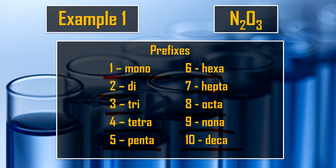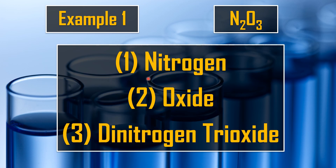Since we have two nitrogen, we use 'di' — dinitrogen. Then we have three oxygen, and since it's the second element we use the IDE name with the prefix tri — trioxide. So the name for this compound is dinitrogen trioxide.